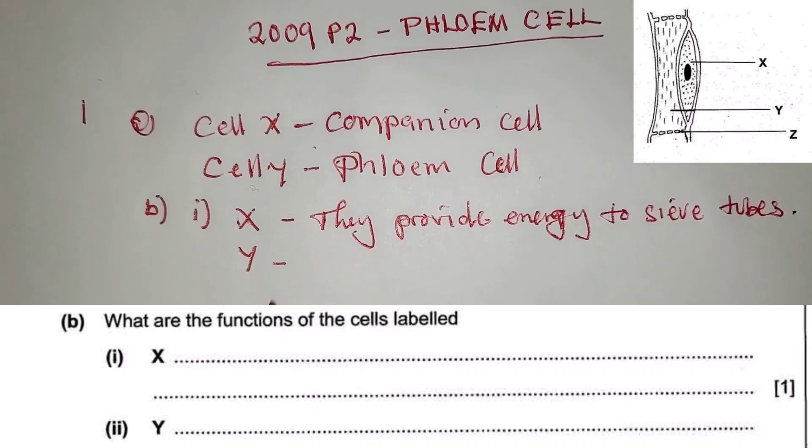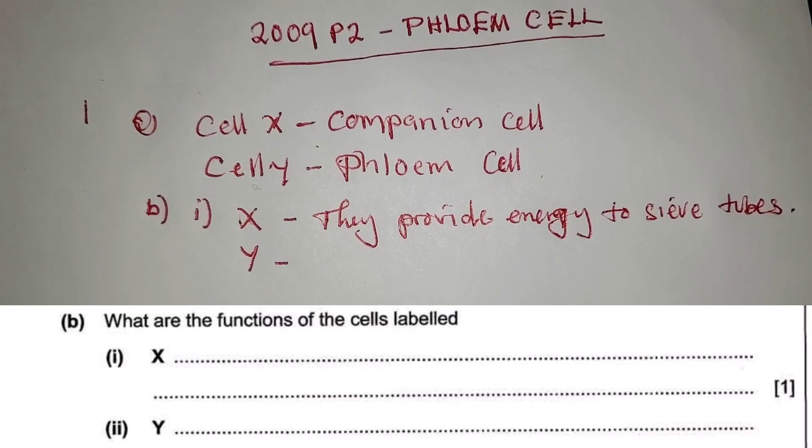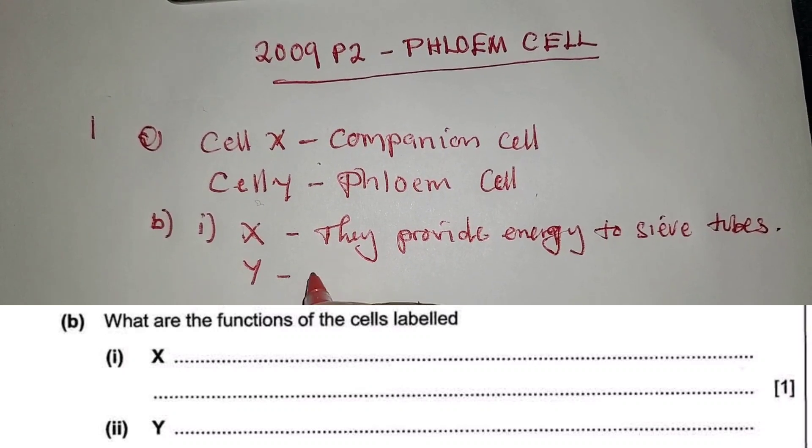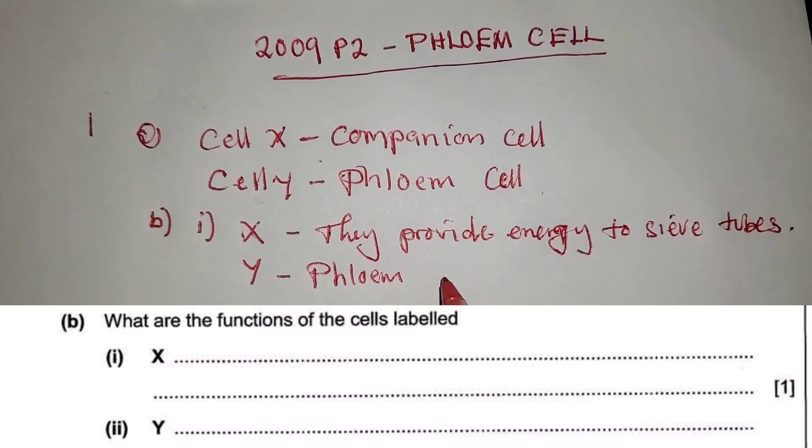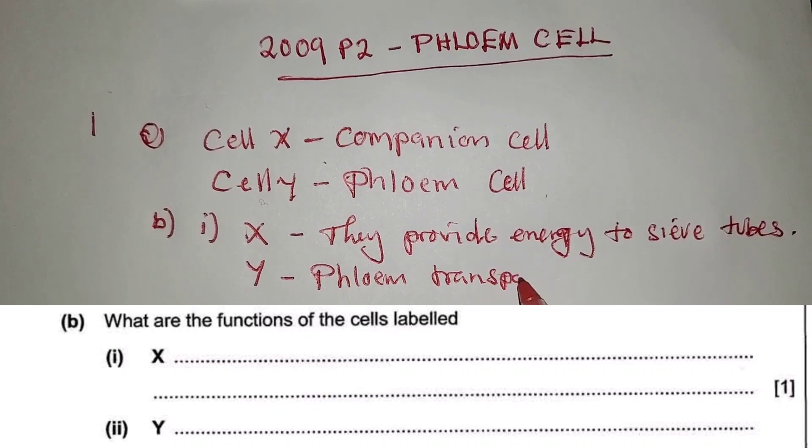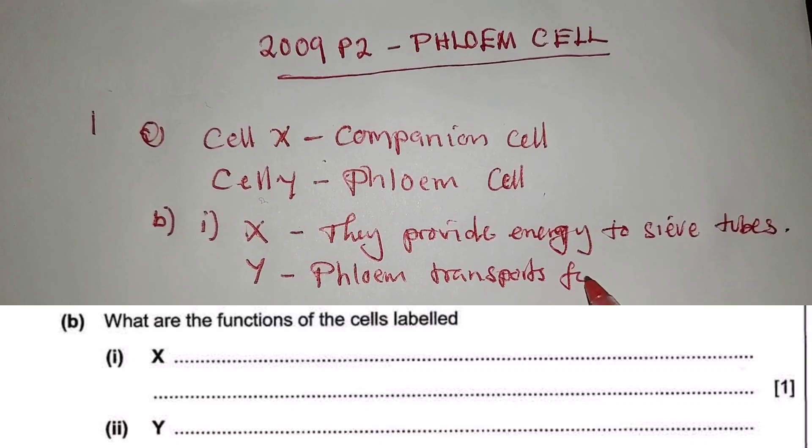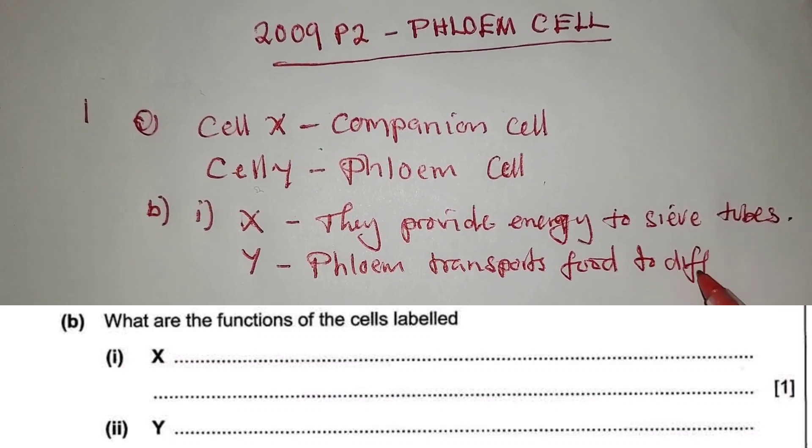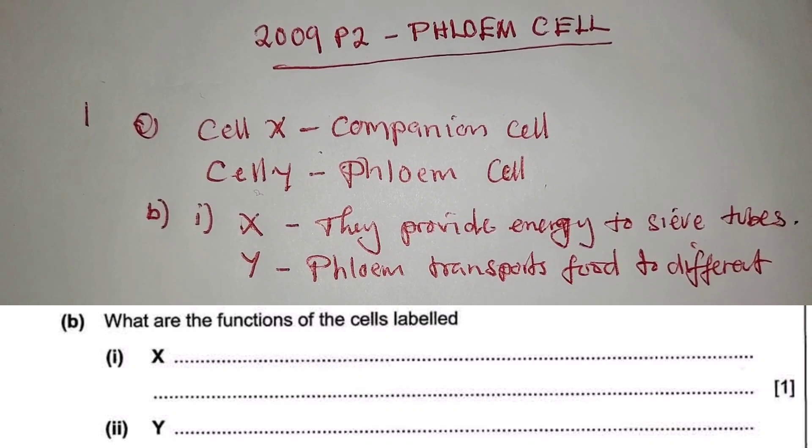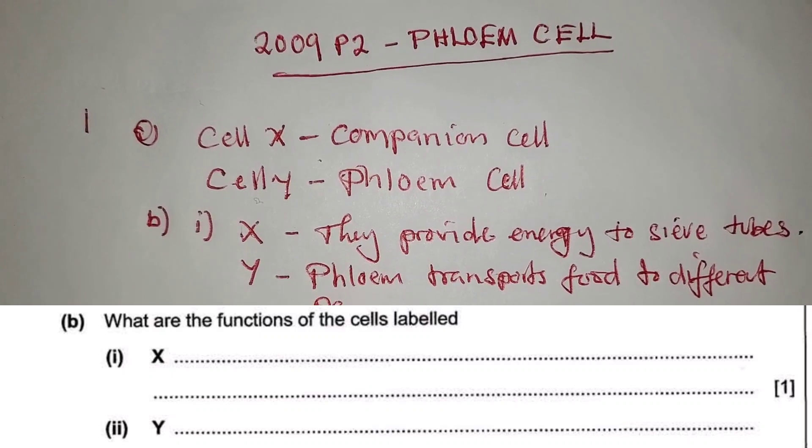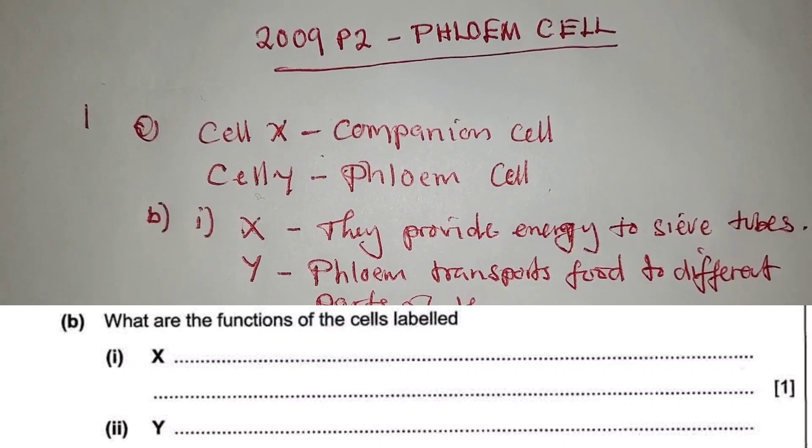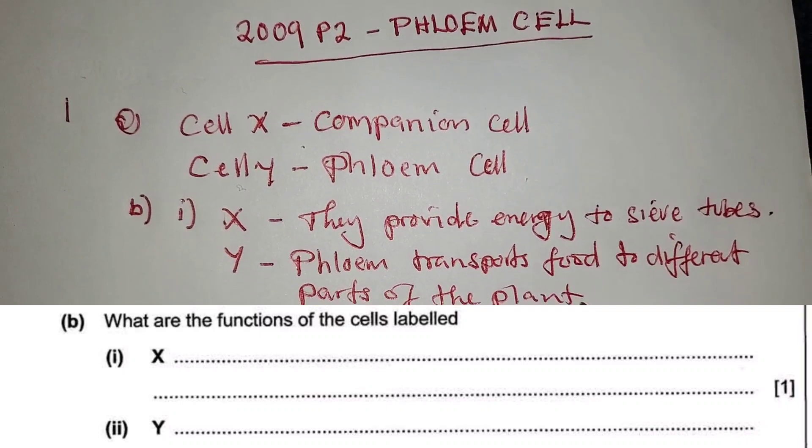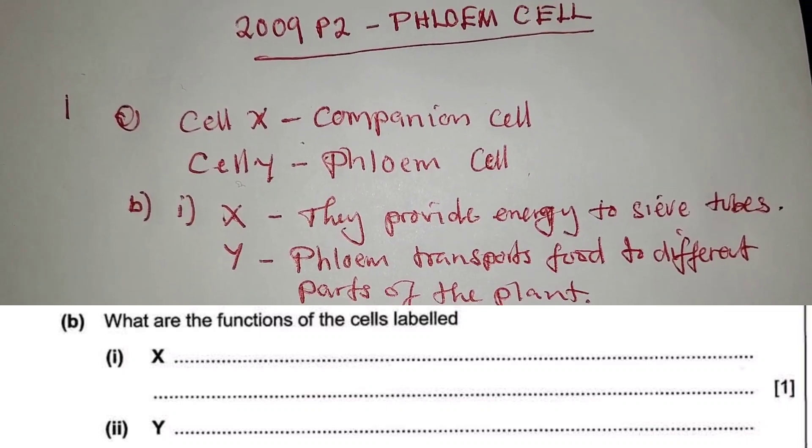The function for cell Y, which is the phloem - the phloem transports food to different parts of the plant. So you can say phloem transports food to different parts of the plant.